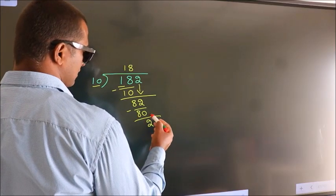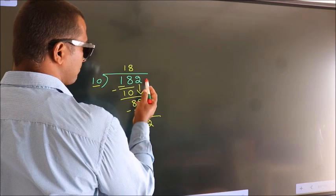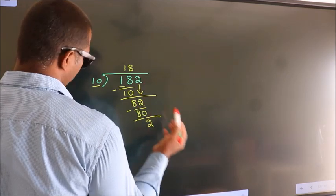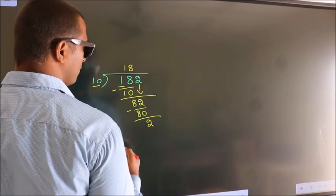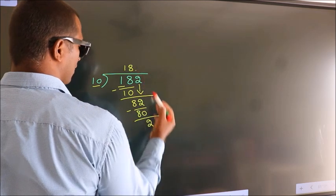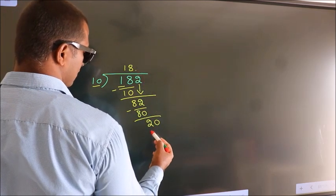After this, no more numbers to bring down. So what we do is, we put a dot, take 0. So 20.